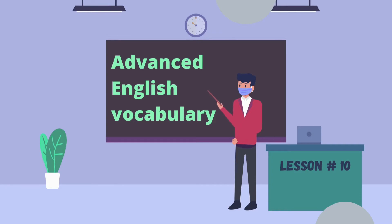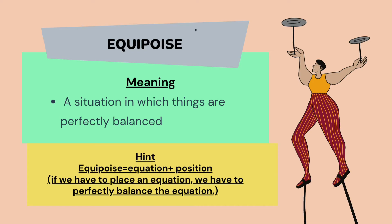The first word of today's lesson is 'equipoise.' Equipoise means a situation in which things are perfectly balanced — a balanced situation, an evenness or equality, giving equal importance to everything.